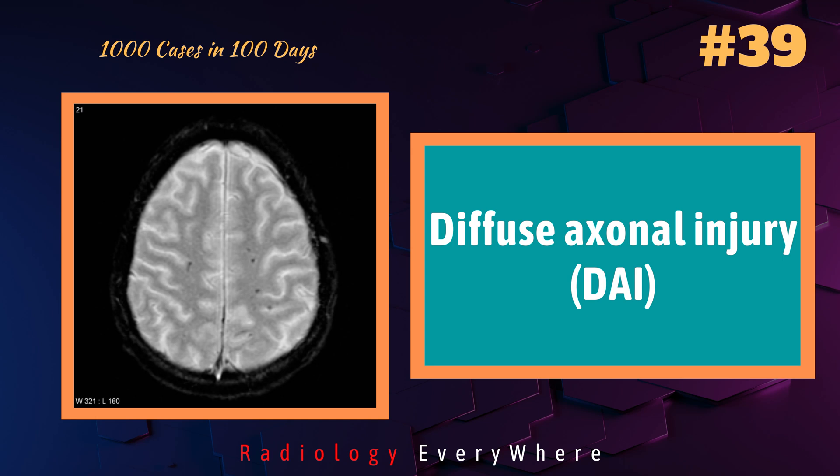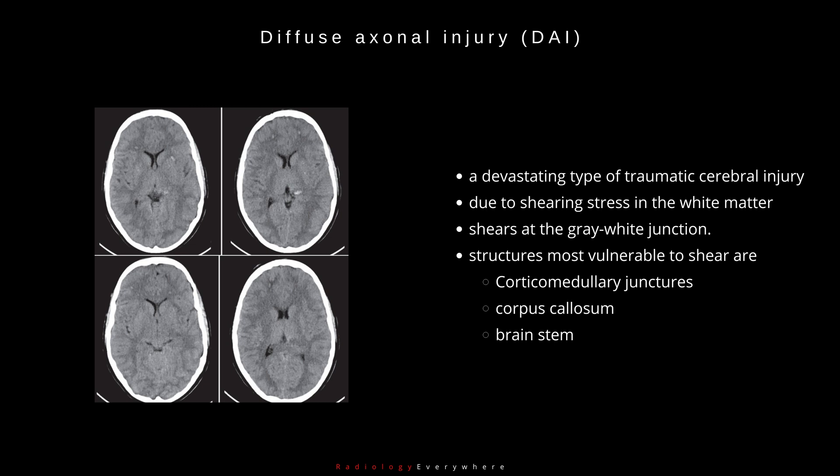In this video, we discuss diffuse axonal injury. Diffuse axonal injury is a devastating type of traumatic cerebral injury due to shearing stress, primarily in the white matter. The brain parenchyma shears at the grey-white junction. Structures most vulnerable to shear are corticomedullary junctures, corpus callosum, and brain stem.